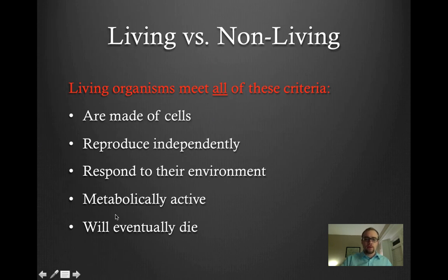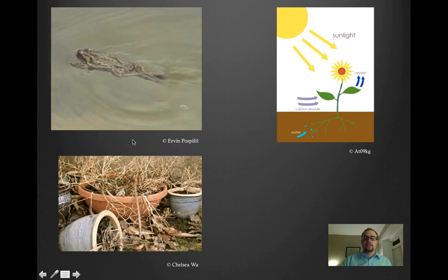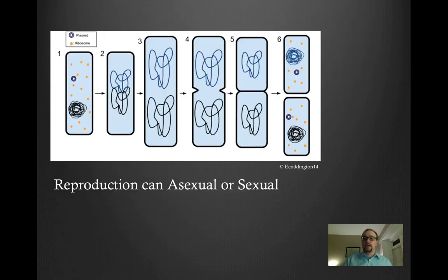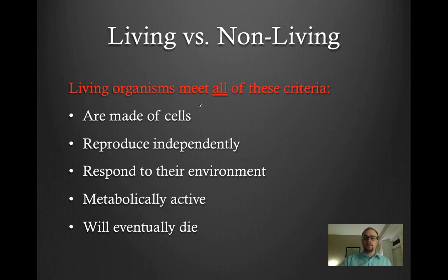Finally, all living organisms will eventually die. This plant will have a lifespan of a few years — some plants can live for hundreds of years — but eventually that lifespan will come to an end. To recap, all living organisms must meet all five criteria: they need to be made of cells; they can reproduce independently — and this will become important when we talk about whether viruses are alive or not; they are able to respond to their environment; they are metabolically active; and all living organisms will eventually die.